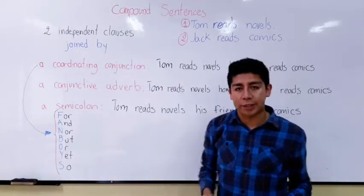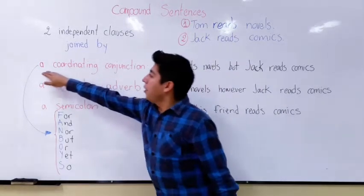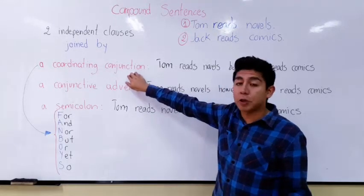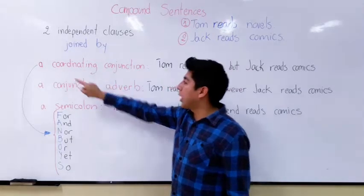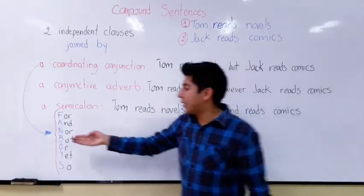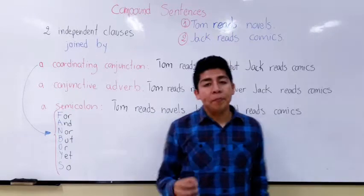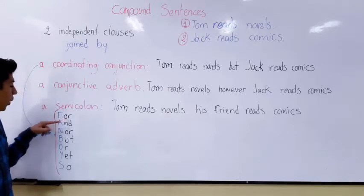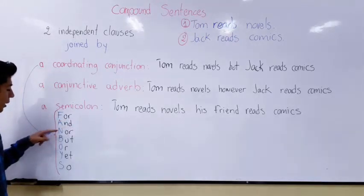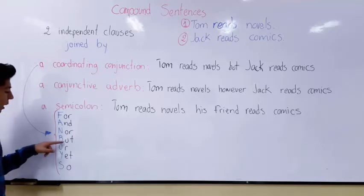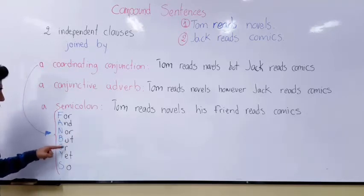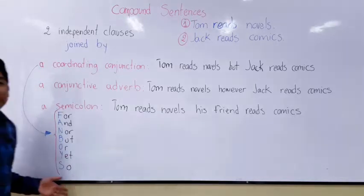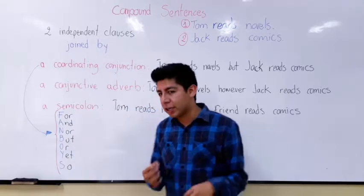The first option for joining two independent clauses is coordinating conjunctions, also known as FANBOYS. The first letter F stands for 'for,' A stands for 'and,' N stands for 'nor,' B stands for 'but,' O stands for 'or,' Y stands for 'yet,' and S stands for 'so.' This is a quick way to remember all of the coordinating conjunctions.